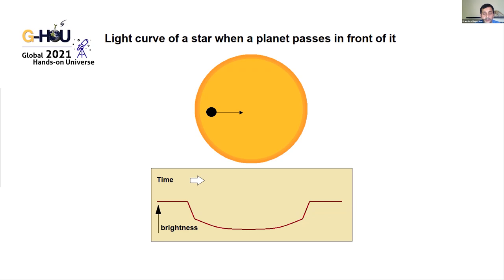The easiest method to detect exoplanets is the transit method. When a planet passes in front of the star, the brightness of the star decreases. If the decrease in brightness is very large, this indicates that the planet is very big relative to the star.